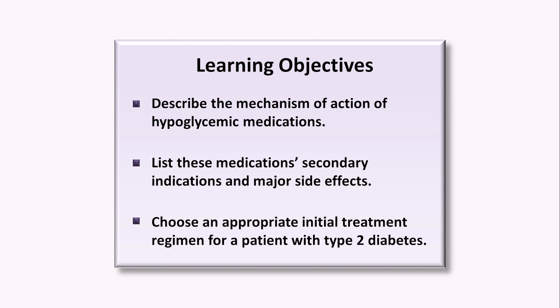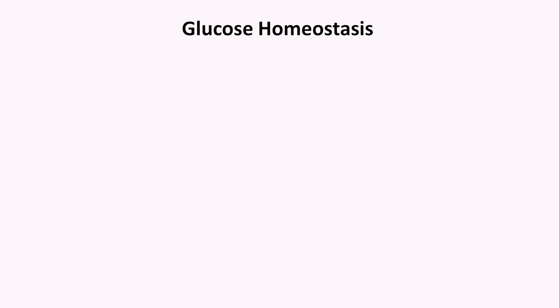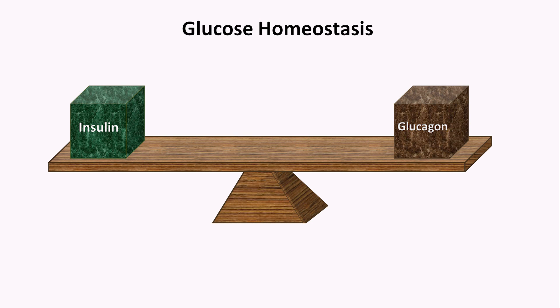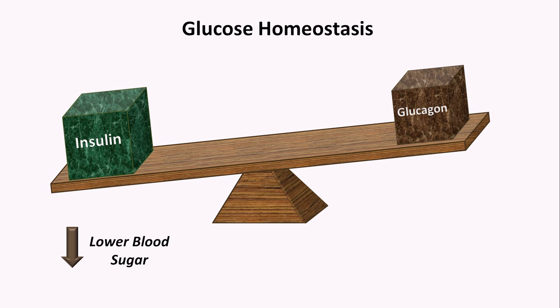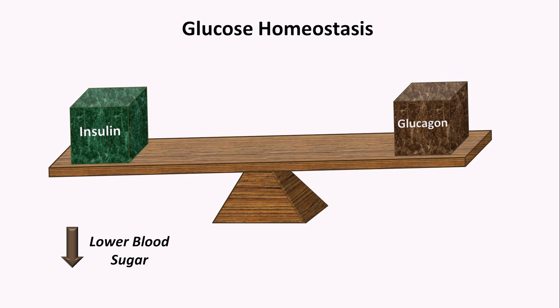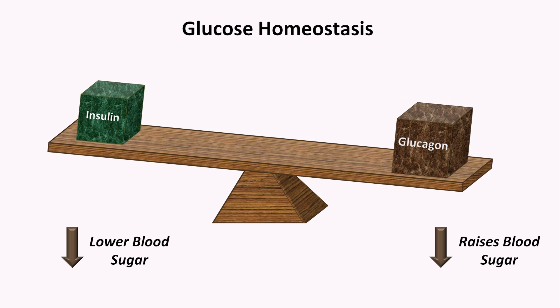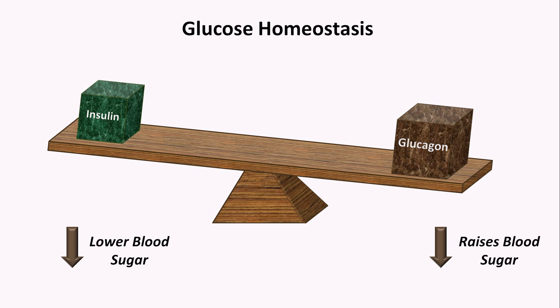Glucose homeostasis is the process of maintaining the body's glucose within a safe and appropriate range. It's largely controlled by the actions of two hormones, insulin and glucagon. Any process which increases insulin's release or activity lowers the blood sugar, while anything that decreases insulin's release or activity raises blood sugar. Abnormalities of glucagon secretion also impact blood sugar, but these are far more rare.